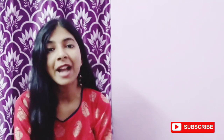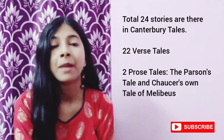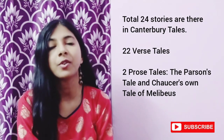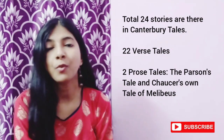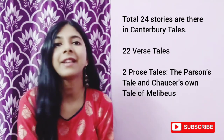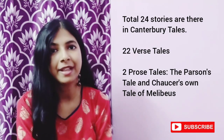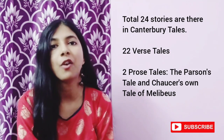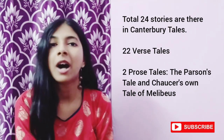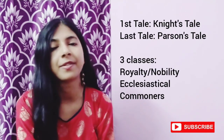Canterbury Tales would have been a collection of 120 stories, but unfortunately Chaucer could complete only 24 stories before his death. There are only two prose tales in Canterbury Tales: the Parson's Tale and Chaucer's own Tale of Melibeus. The other 22 are verse tales. The first story is the Knight's Tale and the last story is the Parson's Tale.